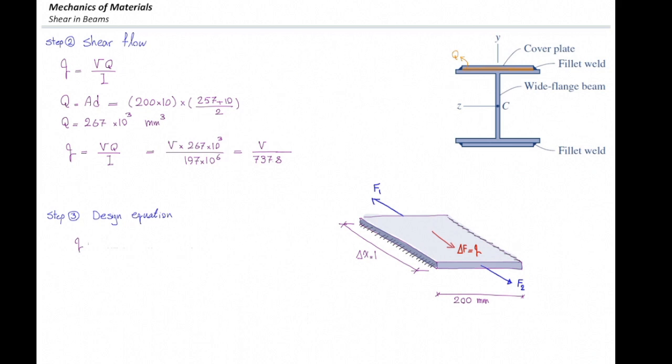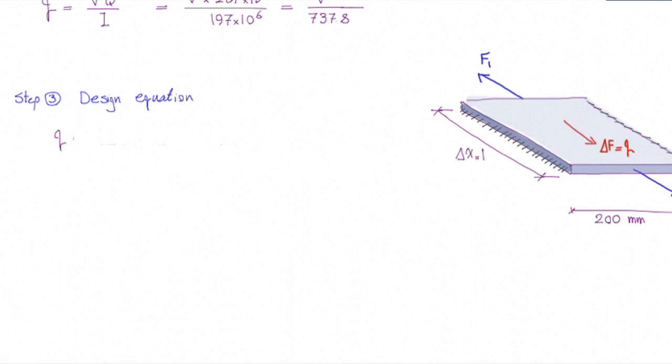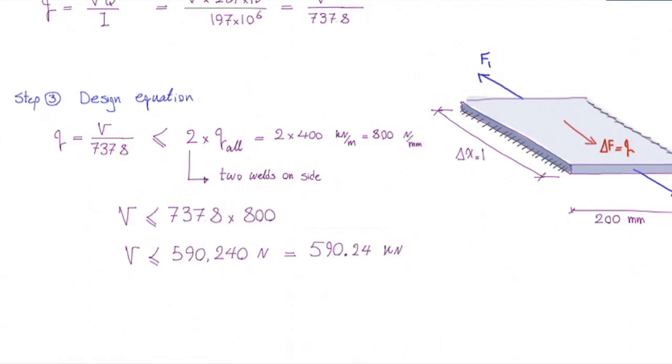So I can write down the design equation like that. q, which I calculated in the previous step, should be smaller than allowable q of that weld. But because we have two welds on the side, I'm going to multiply that by two. And this is 400 kilonewtons over meter, or 800 newtons over millimeter after multiplying that by two. And then I can solve that for V, and that gives me V equal to this value.